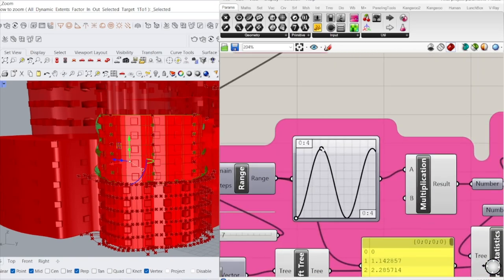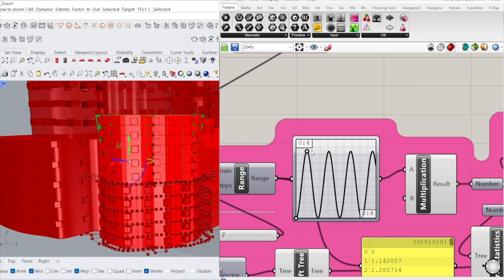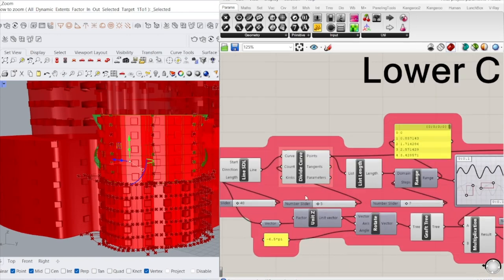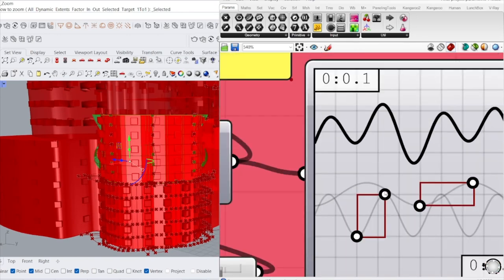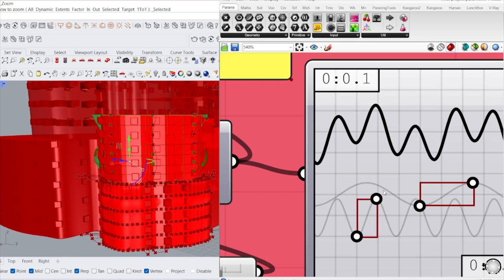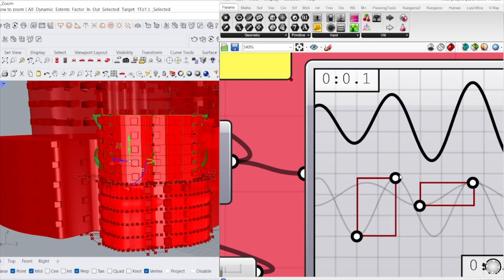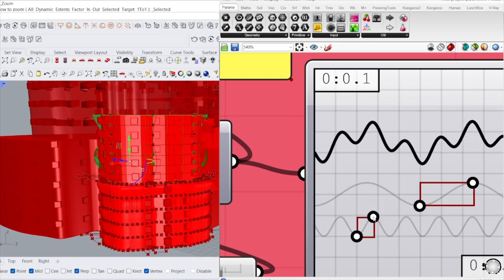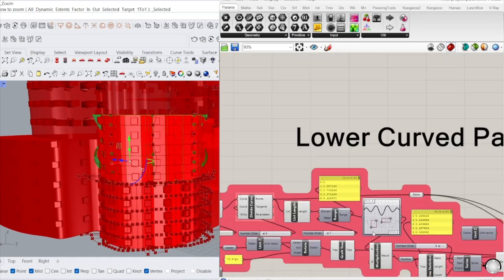So when you look at it, it creates the curvature of the building. But the lower part, when we use sine simulation, it would have a huge difference. It just gives us a slight curve, not like the sine.